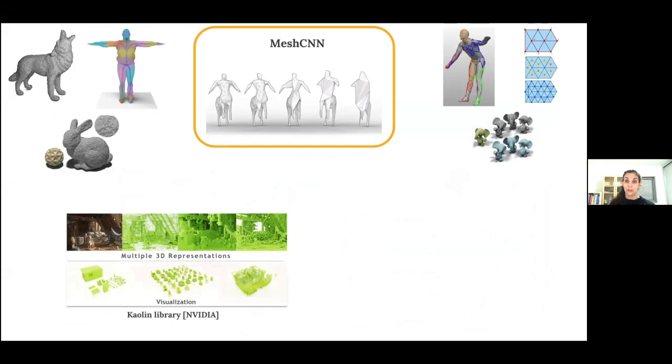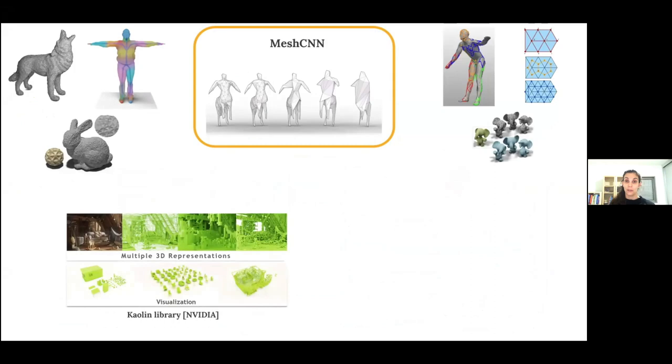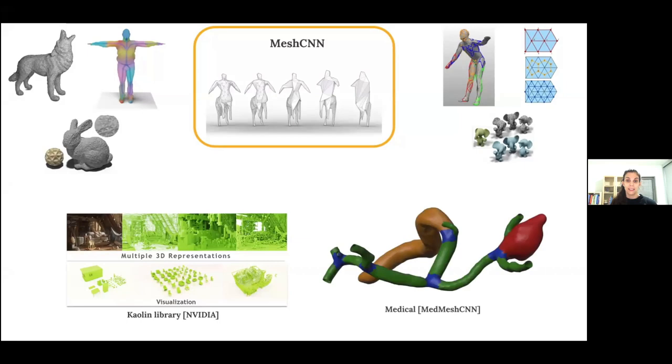Mesh CNN was also selected to be part of NVIDIA's Kaolin library, which is used by researchers, engineers, and hobbyists to rapidly prototype 3D machine learning solutions. And mesh CNN has been adopted more broadly in medical applications, for example. This work used mesh CNN to segment vessel structures, and I'm very excited to see what else is next. So this is a good time for questions if there are any.